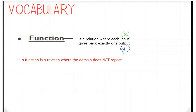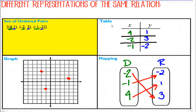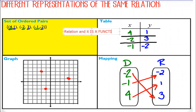We're going to look at some of the examples we just did and say: is this a function, yes or no? So if we look at our first example — the ordered pairs — our inputs are 4, negative 2, and negative 1. Do I repeat any of my X values? The answer is no. So this is not just a relation — it's a relation, and it is a function.